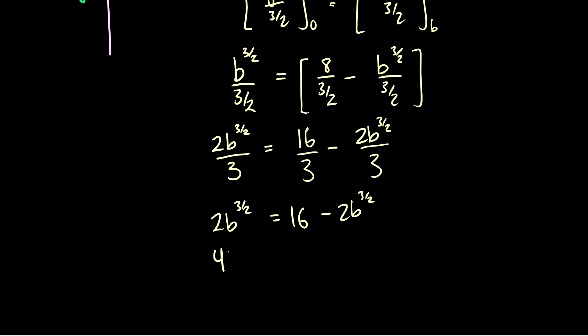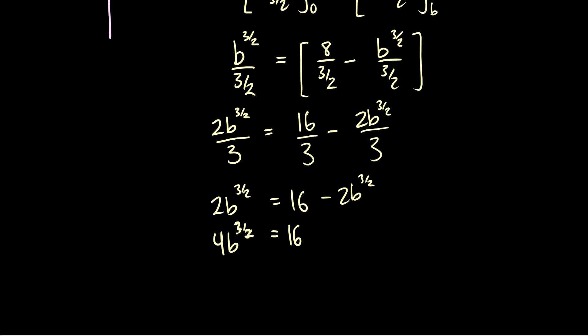So we'll have 4 b to the 3 halves is equal to 16. And now we'll divide both sides by 4. So b to the 3 halves is equal to 4.